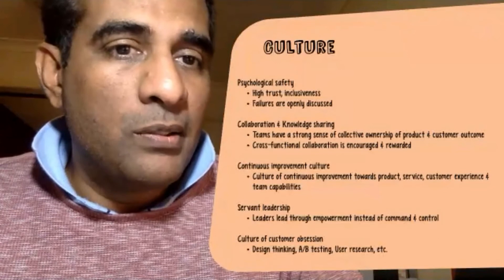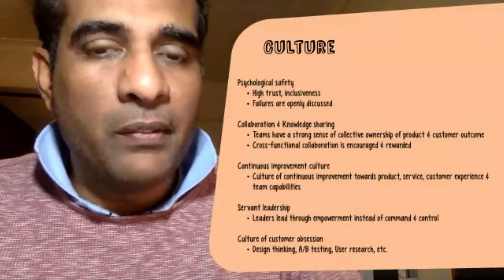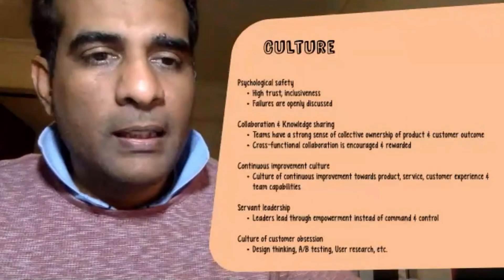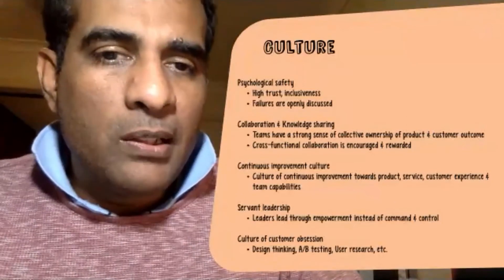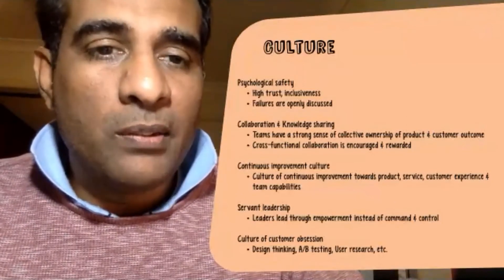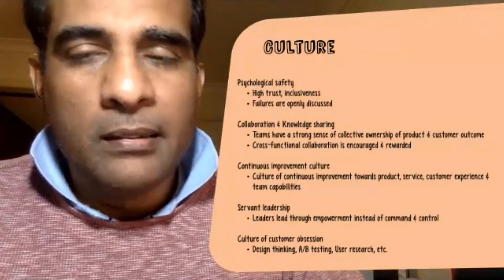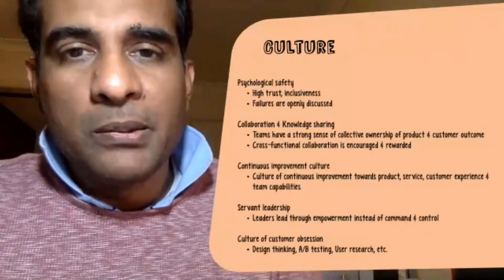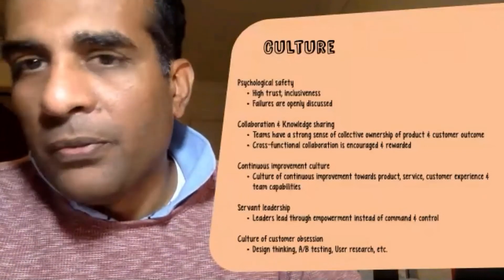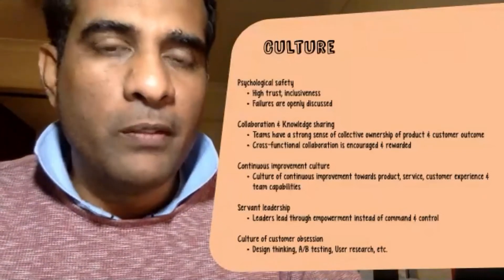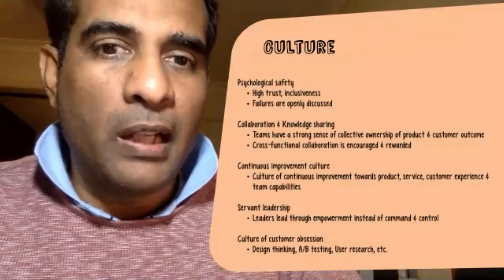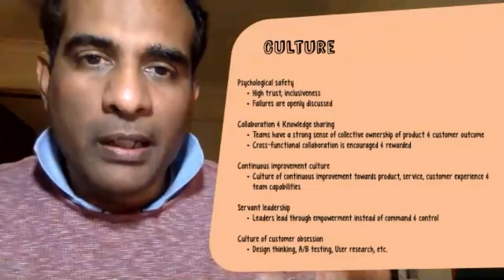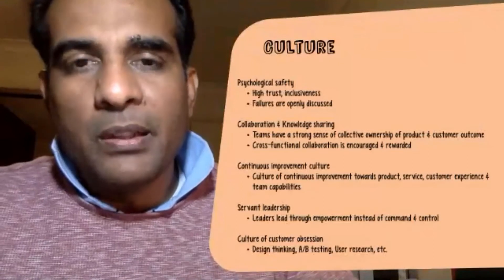There's also the continuous improvement culture where you're constantly striving to improve the overall capability of the team. And last but not least, there's servant leadership — basically leaders lead through empowerment instead of command and control. If you're following things like Scrum, which encourages this kind of behavior, you already have some of these things entrenched within your organization.